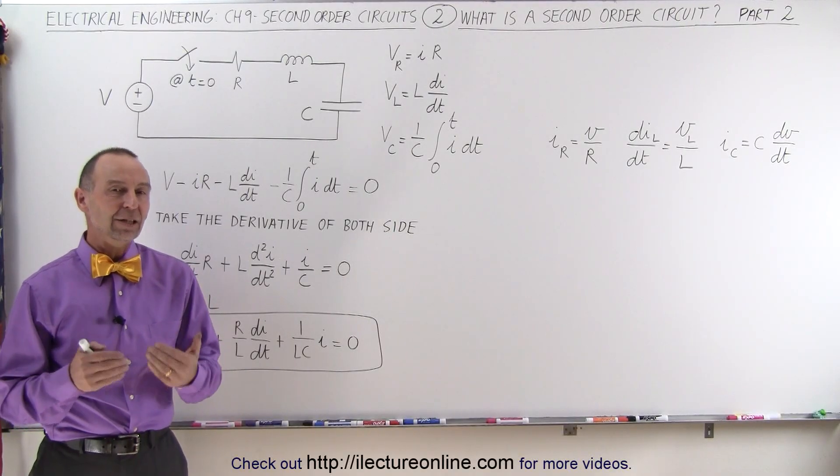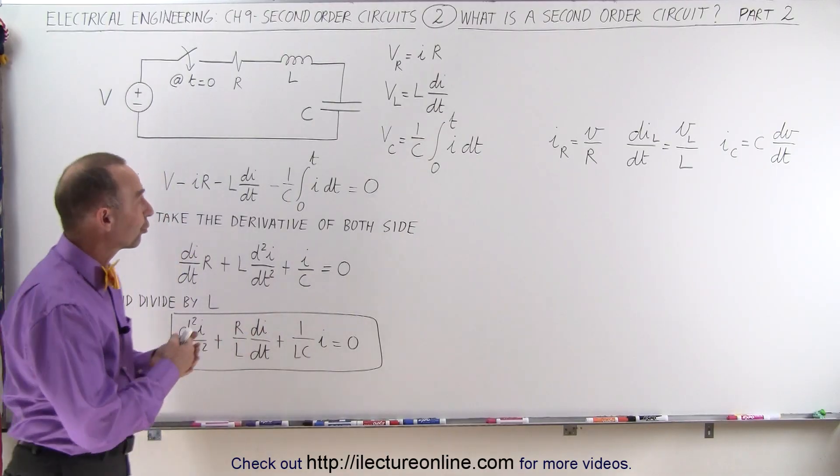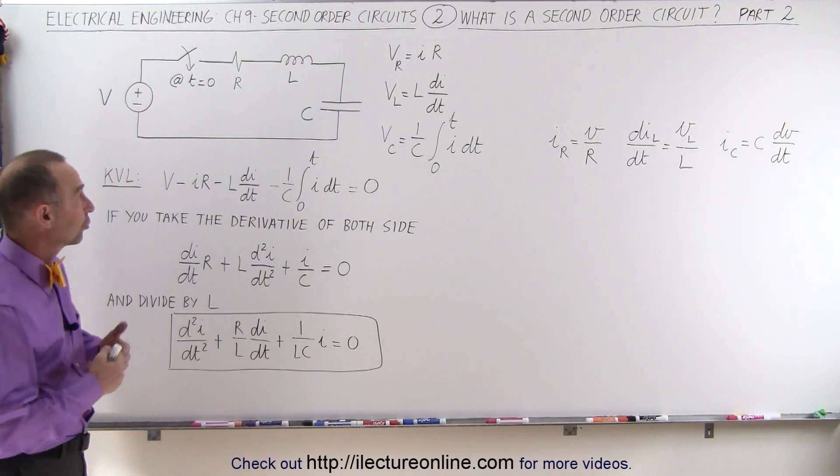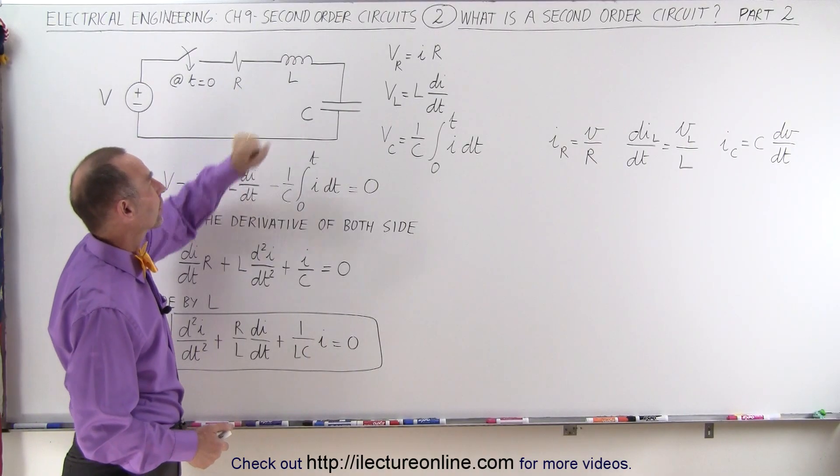Welcome to ElectronLine. In this video we're going to take a more mathematical look at what a second order circuit is. Again, a circuit that contains a resistor and at least two energy storing devices like an inductor and a capacitor.